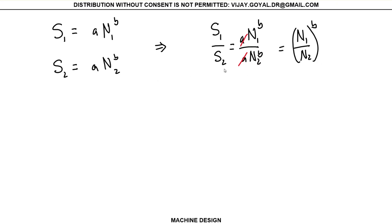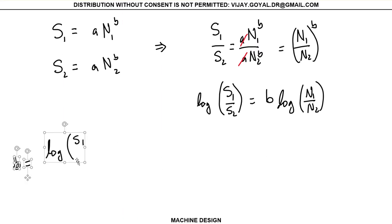So I can take log on both sides now. If I take log on both sides, log S1 divided by S2 will equal b times log of N1 divided by N2. So now I could solve for b, and b is equal to log S1 divided by S2, divided by log N1 divided by N2.